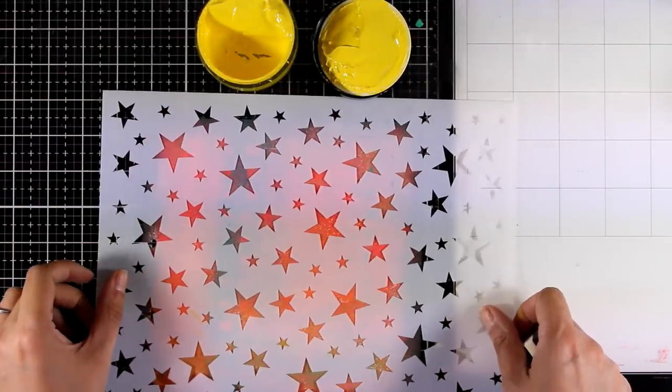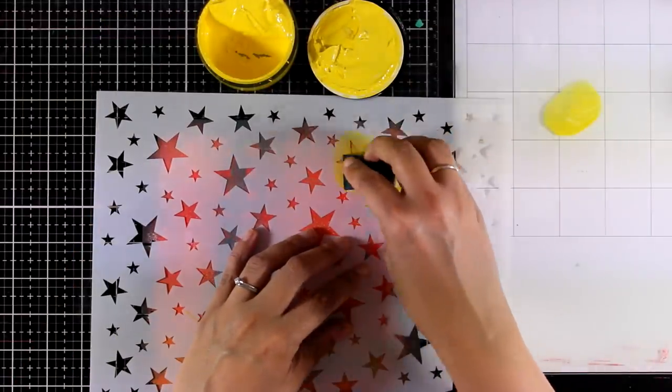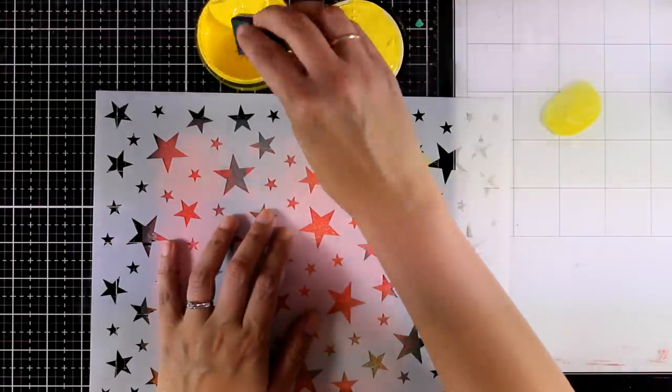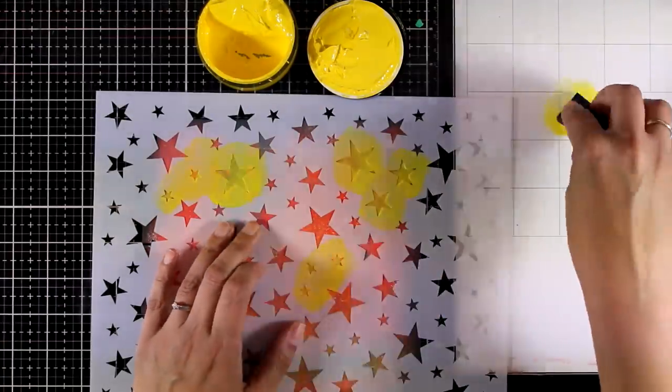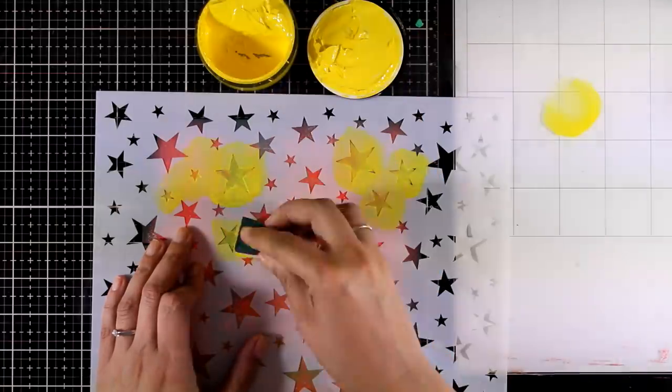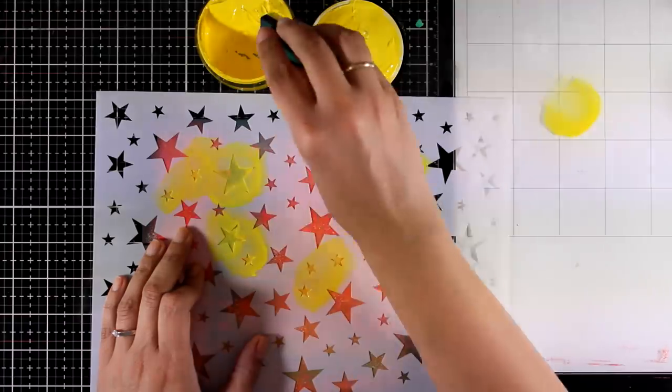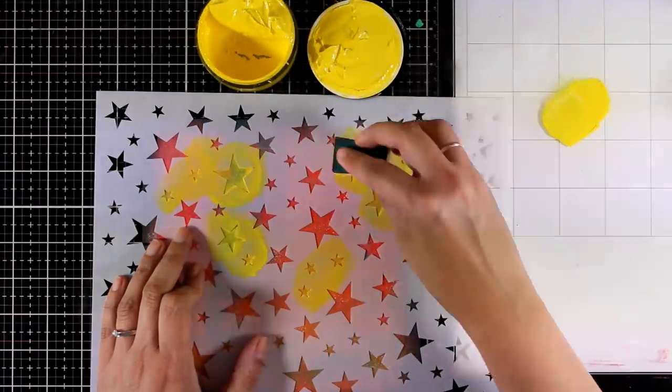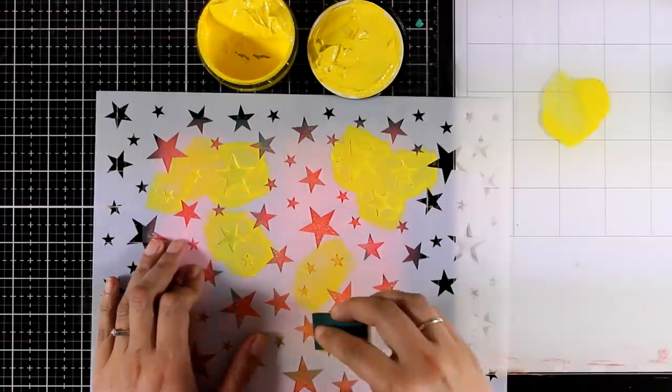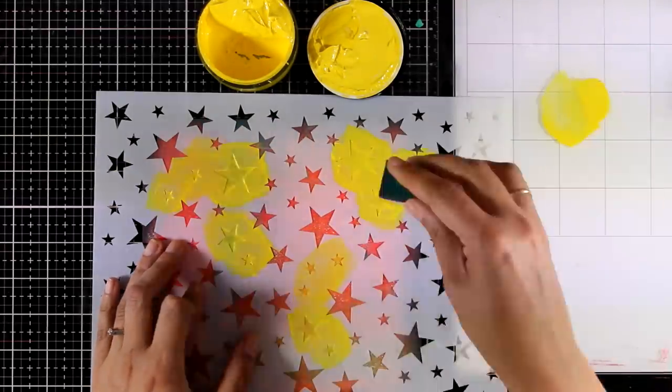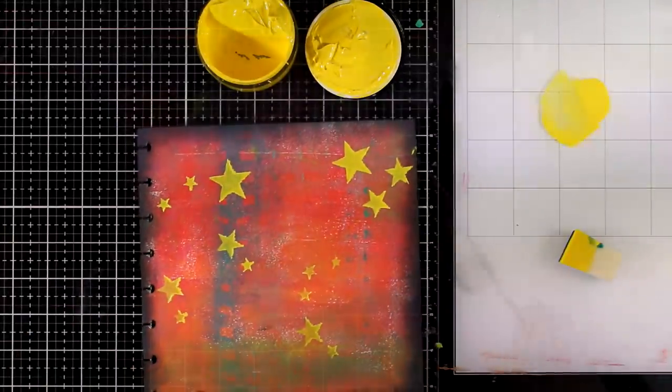Now I'm going to use this large stencil by Darkroom Door which is full of stars, absolutely adorable and so versatile. I'm applying some yellow acrylic paint over those stars in different areas. I'm going for a magical background today and I wanted to create a kind of a sky but stay away from the usual blues that I work with, so I decided to go with oranges and reds.